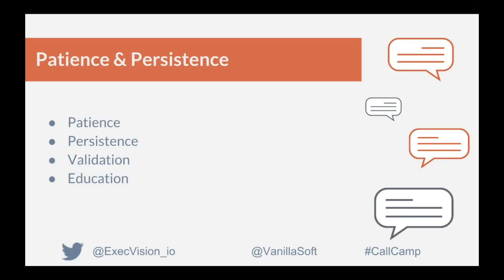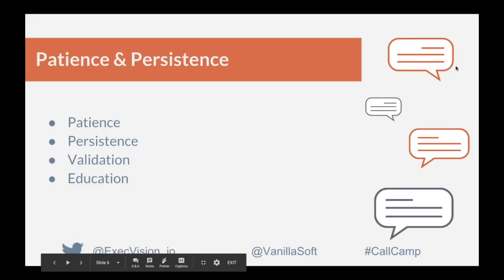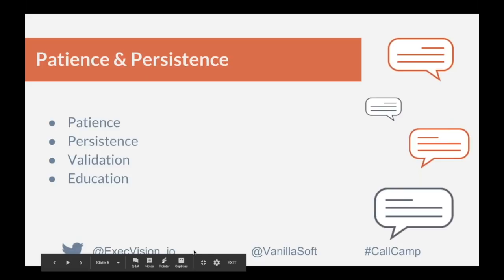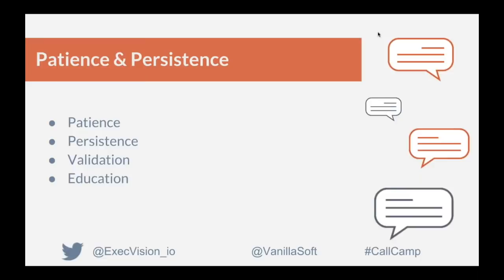Persistence: there are constant stats that say 8 to 12 attempts is the average, and this can include phone attempts, emails, video, LinkedIn, and voicemails. How many attempts is your sales organization making? What does the sales cadence look like? It's not just 12 phone calls and hang up — what's the message that goes along with the emails, LinkedIn, and video? Video has become a big part of the process now, including personalized videos for a more human touch.